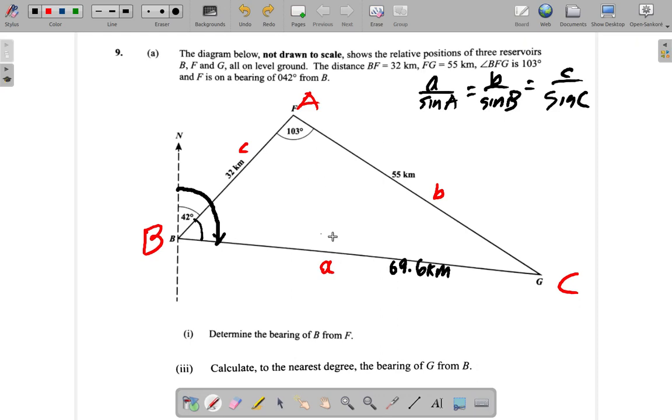Now a over sine A—we could use this a. The small a is 69.6, 69.6 over sine of 103, that's big A, is equal to